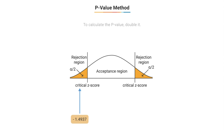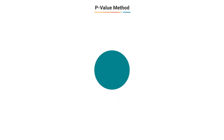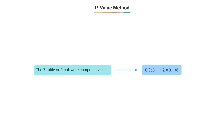At the left tail, the z-value is −1.4937. Going to the z-table, we break the z-score into −1.4 and 0.09. The corresponding value from the z-table is 0.06811. Doubling it gives 0.136. So our p-value is 0.136, completing step 3.